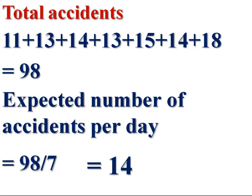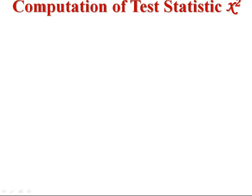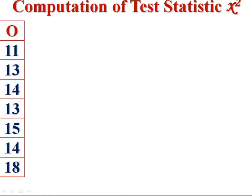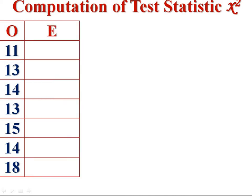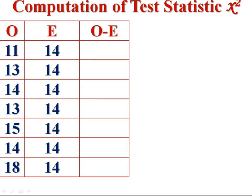Then compute test statistic, chi-square. First column, observed frequencies, that is, actual accidents, 11, 13, 14, 13, 15, 14, 18. Second column, expected or theoretical frequencies, we computed it, 14 per day.